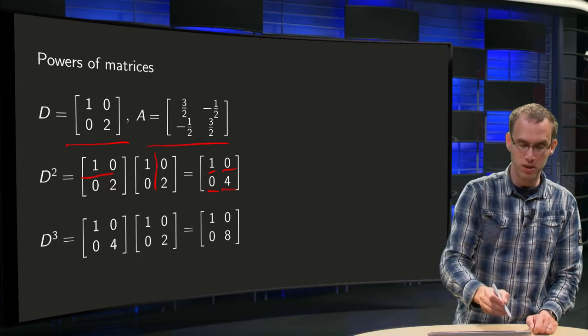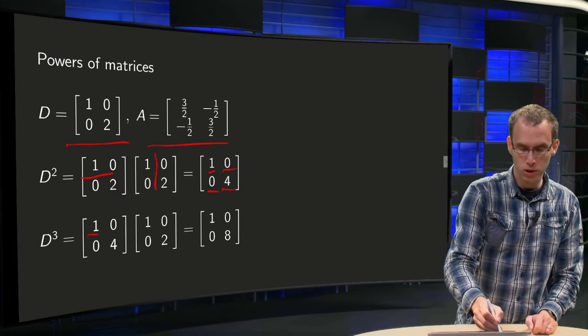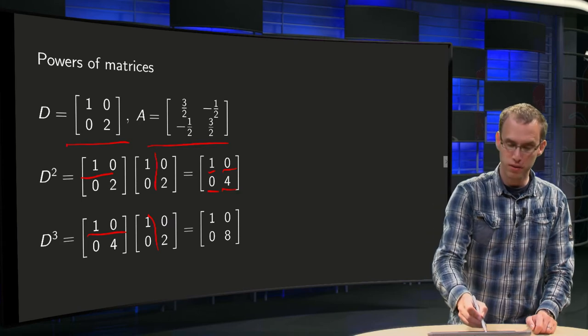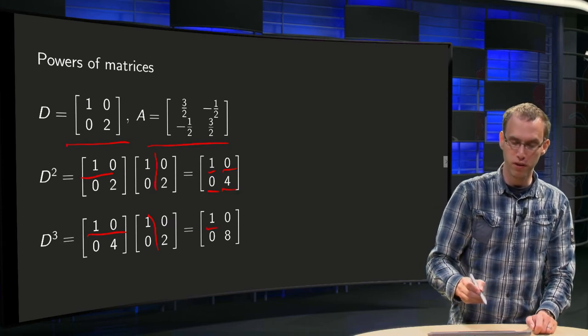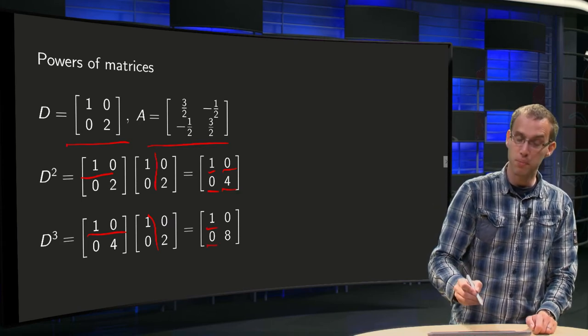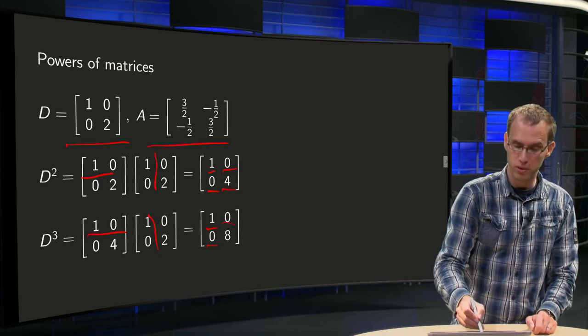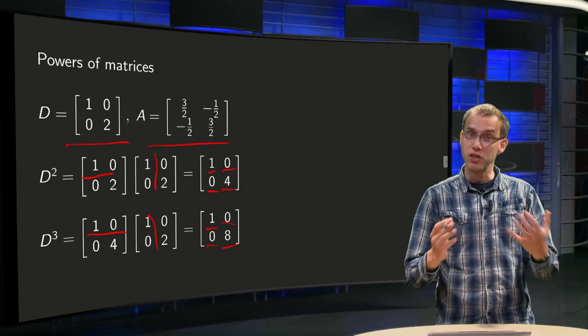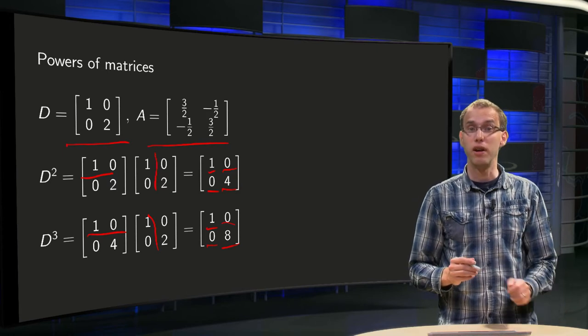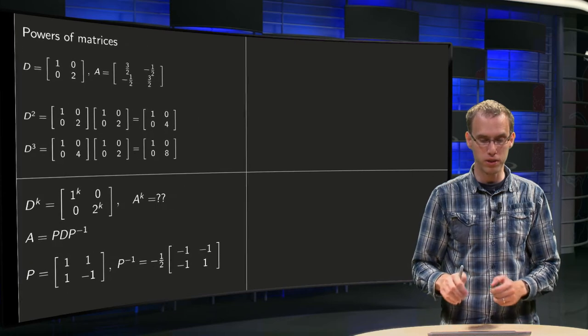Let us start to compute D cubed. Here is the row column rule again. Inner product 1,0 with 1,0 equals 1, inner product 0,4 with 1,0 equals 0, inner product 1,0 with 0,2 equals 0 again, and inner product 0,4 with 0,2 equals 8. And you see, we still have a diagonal matrix, and you see how you can compute those powers now.